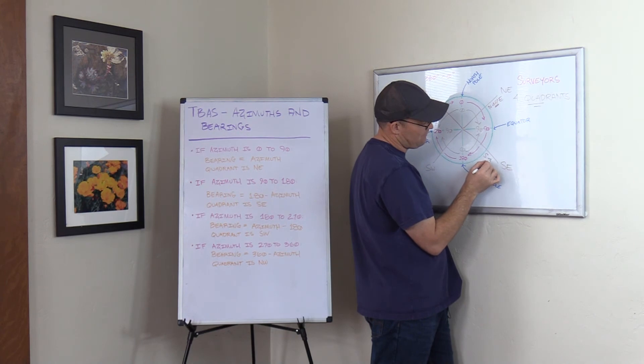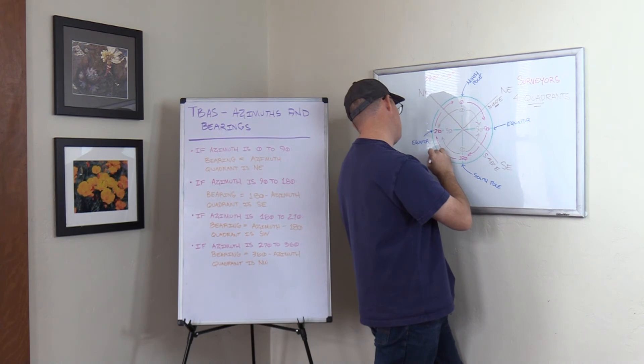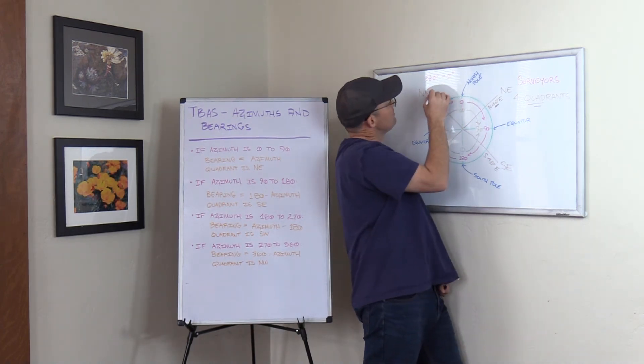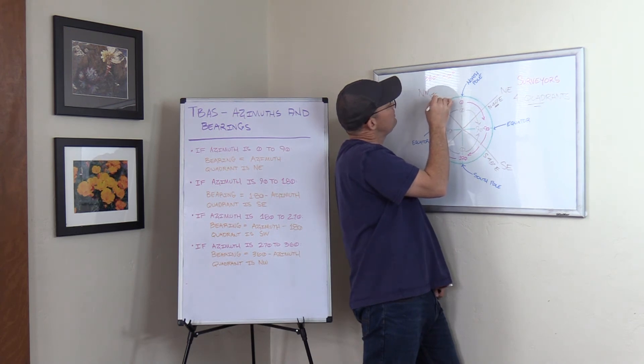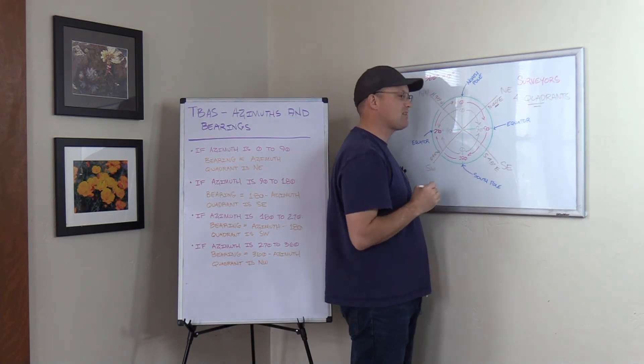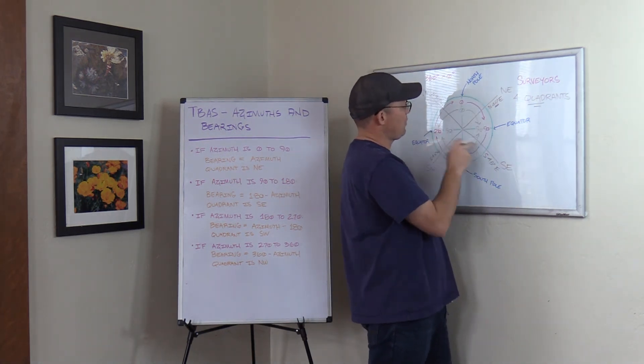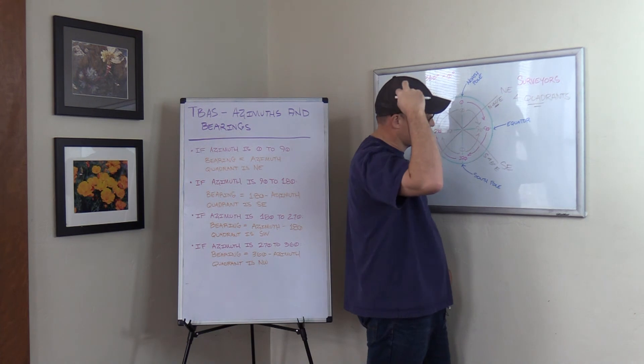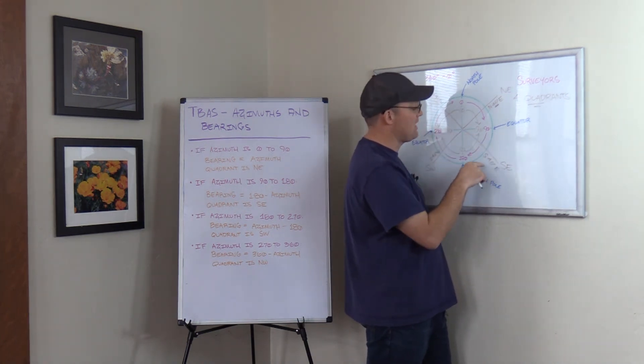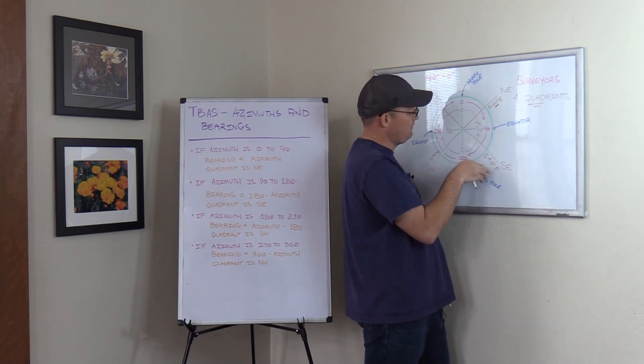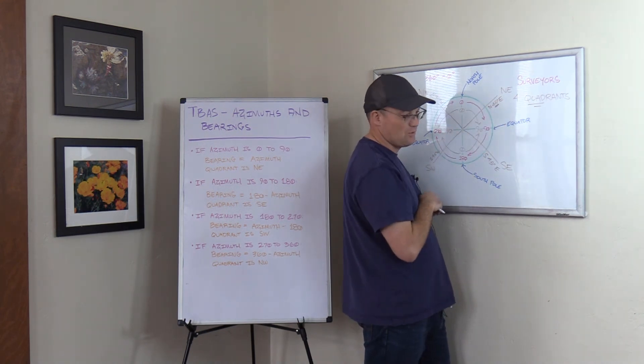This one would be south 45 degrees east. This would be south 45 degrees west. And this would be north 45 degrees west. Now, I told you I didn't know why bearings were invented. That's actually a lie. You notice before when I did these four lines, when I was figuring out the azimuth, I had to do some math in my head to figure out what those azimuths are. The nice things about bearings is you don't have to do that math, right? It makes it a little easier to work with certain types of directions.